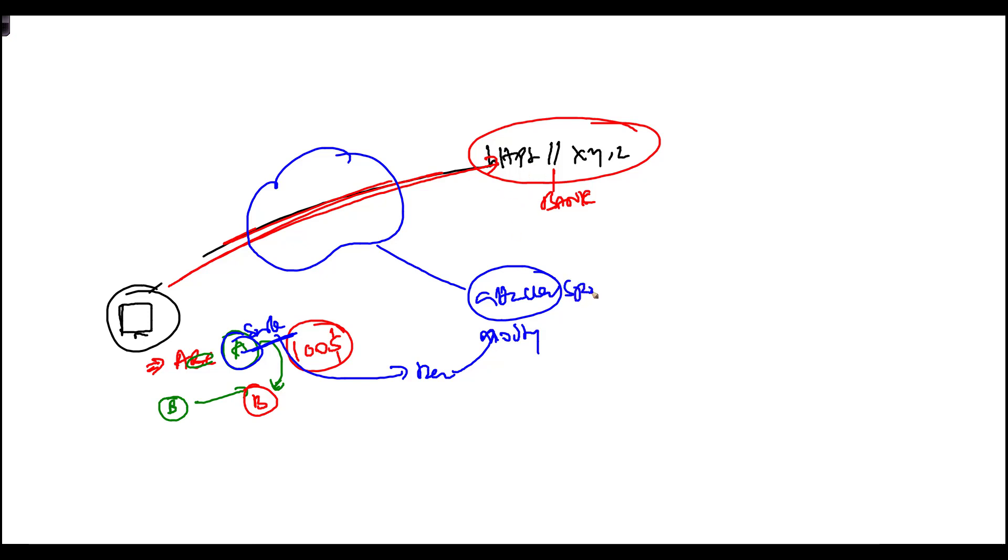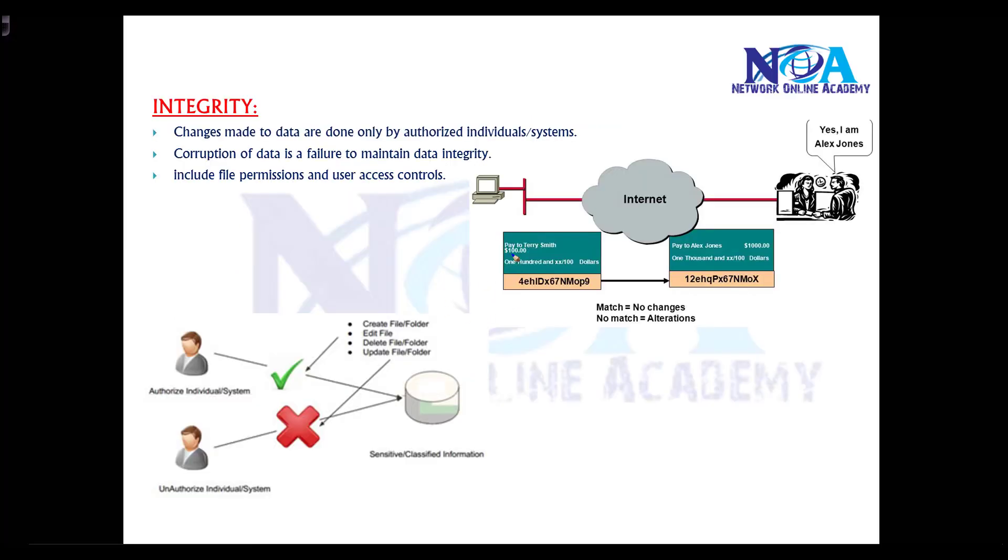At the end, the attacker can spoof or pretend to be B and get the amount transferred. Or the specific amount can be changed. For example, the rule might be 'pay Terry Smith $100,' but when sent it changes to 'pay Alex Jones' - the name changes and the amount changes, and the attacker claims that transaction. We need to make sure that no one modifies your content. If it is modified, it should be dropped. This is done with the help of hashing algorithms - specific algorithms which ensure that data is not modified in transit. You'll automatically know if any modifications are done, and it will automatically drop the transaction.